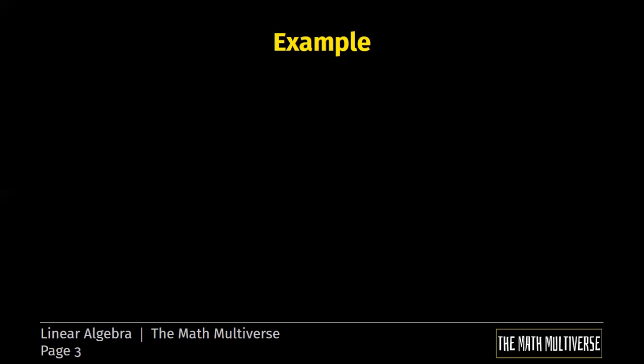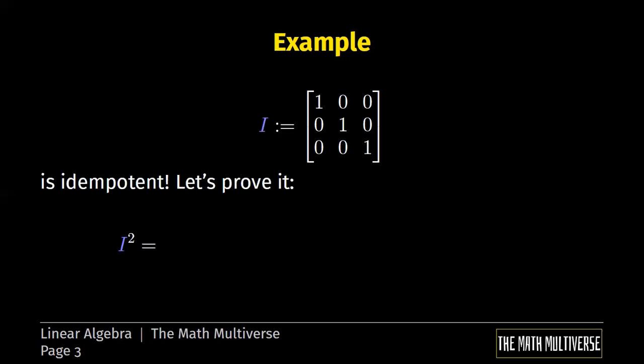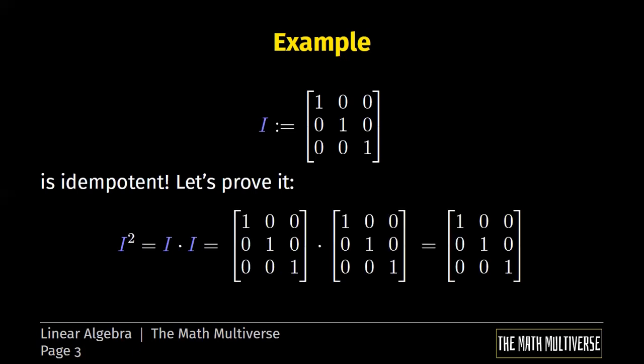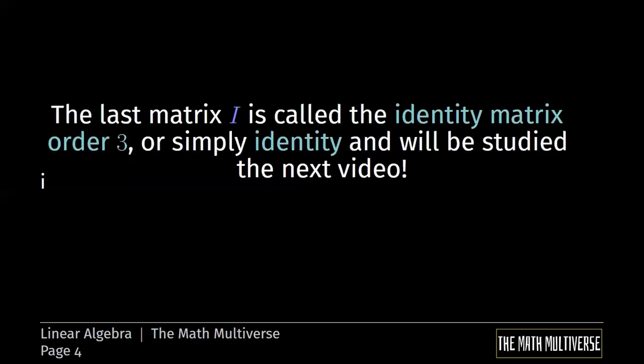Now we are analyzing another interesting example. The matrix I is again a 3 times 3 square matrix, and it is very easy to check that I squared is equal to I. Don't forget that I squared is again I times I. This time I leave to you the straightforward computations. This last matrix I is called the identity matrix over the tree, or simply the identity, and will be studied in the next video. So please stay tuned.